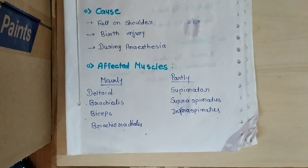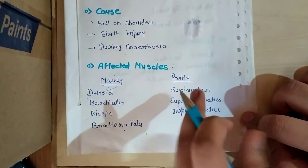So we can say that C5 and C6 are the main two roots damaged. This is mainly the muscles affected, particularly which muscles are affected. Now if the muscles are affected, we can see the movements that are affected.